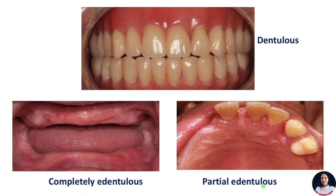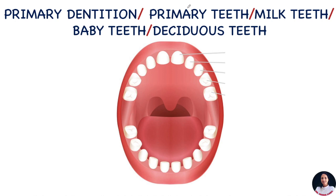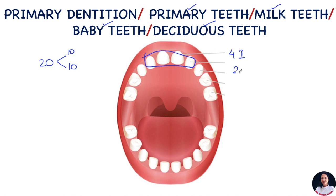Primary dentition is also known as primary teeth, milk teeth, baby teeth, or deciduous teeth. There are a total of 20 teeth in primary dentition — 10 in the upper and 10 in the lower arch. In primary dentition, there are 4 incisors per arch, 2 canines per arch, and 4 molars per arch, making a total of 10 teeth in each arch.